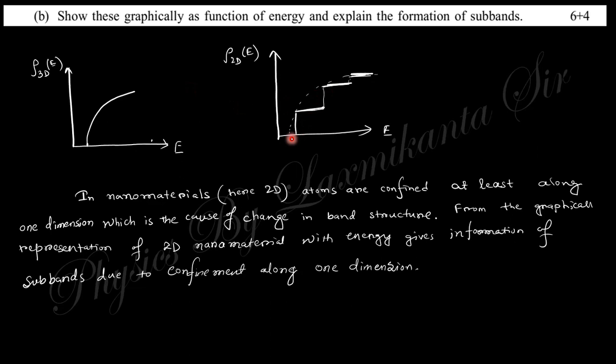If you plot 3D and 2D, 3D will be like this and 2D will be a constant value like that. You can see here there are discrete values, and these discrete values make subbands. This is a band, this is a band, this is a band. So this two-dimensional nanomaterial produces energy subbands.